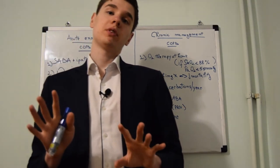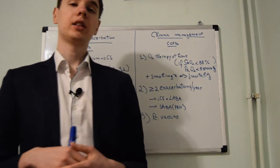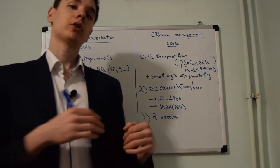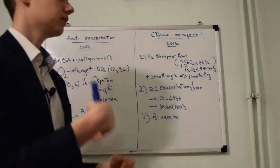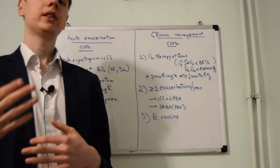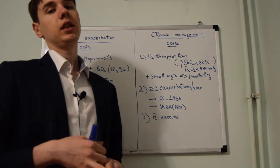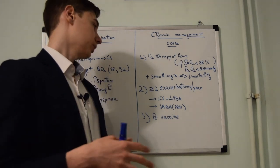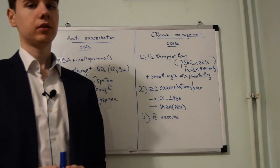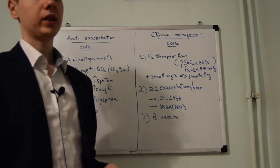Oxygen therapy is prescribed only if oxygen saturation is lower than 88% or partial pressure of oxygen is lower than 55 mmHg. If the patient experiences more than two exacerbations per year, we add an inhaled corticosteroid with long-acting beta-2 agonist and give albuterol when needed.